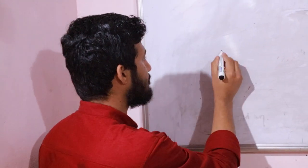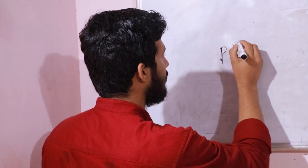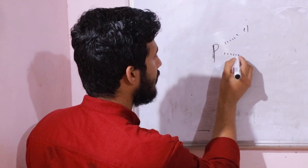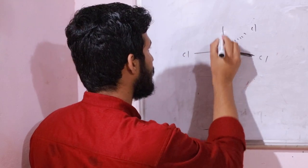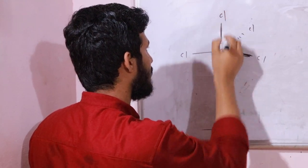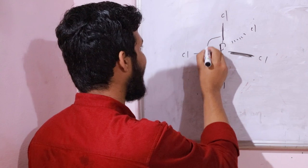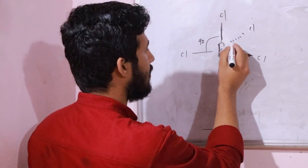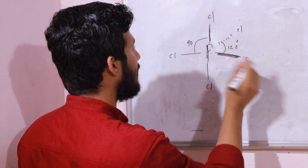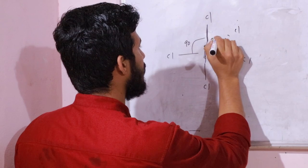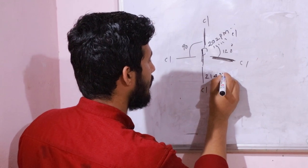In the structure of phosphorus pentachloride, the central atom is phosphorus. There are equatorial bonds and axial bonds. The axial bond angle is 90 degrees, the equatorial bond angle is 120 degrees, the equatorial bond distance is 202 picometers, and the axial bond distance is 214 picometers.